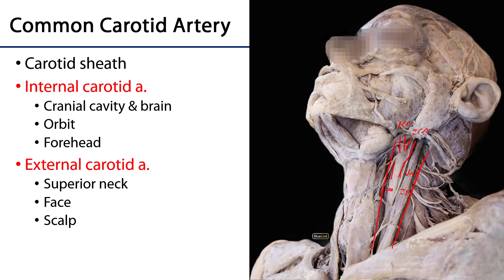Once within the cranial cavity, the internal carotid artery serves the brain with blood and is a major contributor to the cerebral arterial circle of Willis. It gives off the ophthalmic artery, which is conducted into the orbit and is the major blood supply to the orbit, with branches leaving the orbit to supply the superior face and forehead. The external carotid artery has many branches supplying the neck, superficial face, deep face, and scalp. Its terminal branches include the maxillary artery, which supplies the deep face, and the superficial temporal artery, which supplies the scalp.